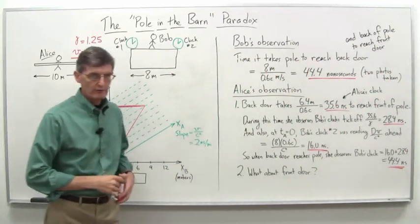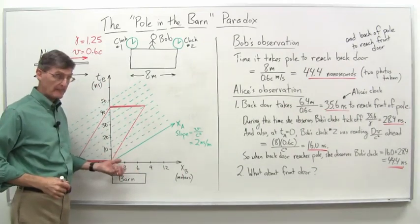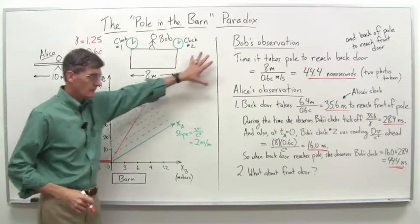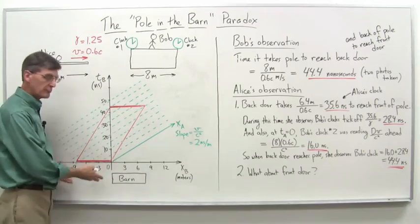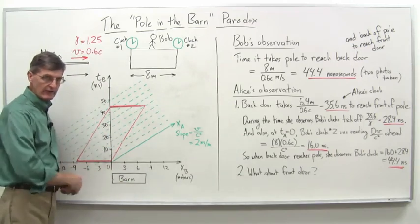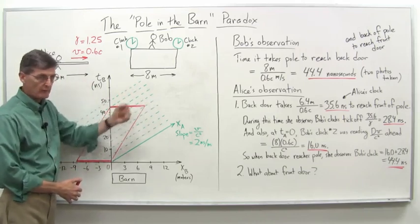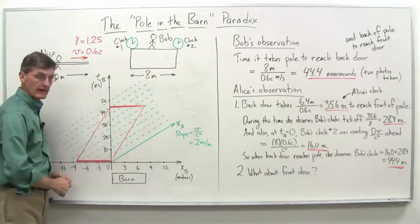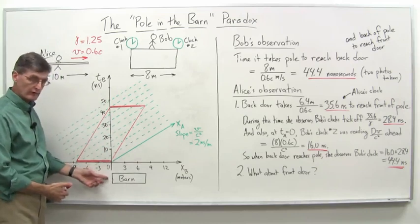Let's finish off the pole in the barn paradox by doing a space-time diagram, as we've done several times before. Here's all the calculations we did before. And here's a space-time diagram where the black axes, 90-degree axes, horizontal and vertical, are Bob's barn frame of reference. We've got meters and nanoseconds and put the units on there.